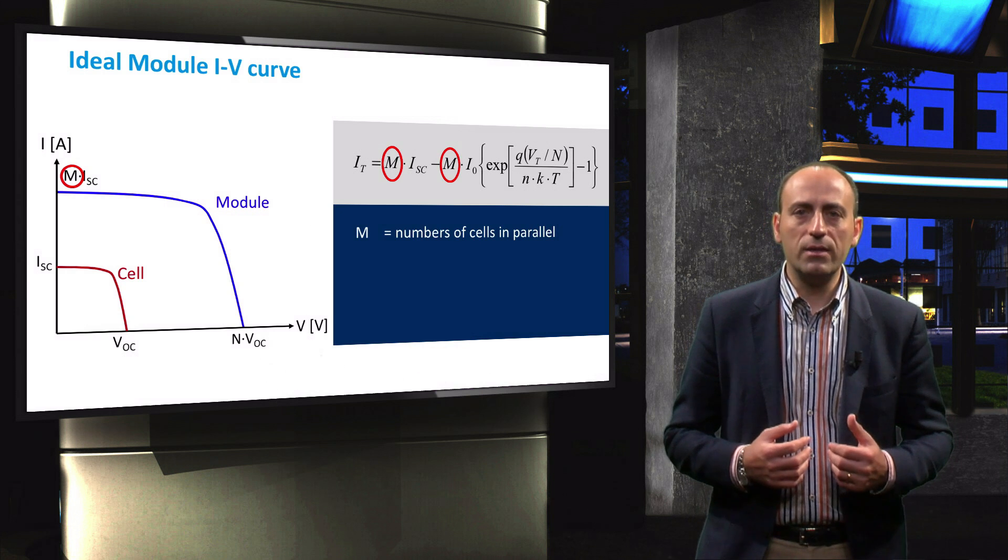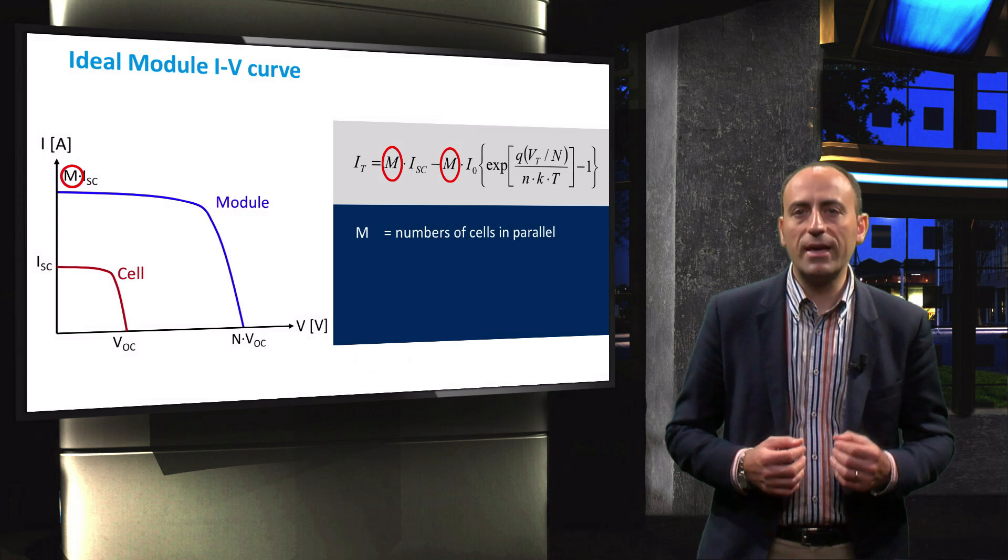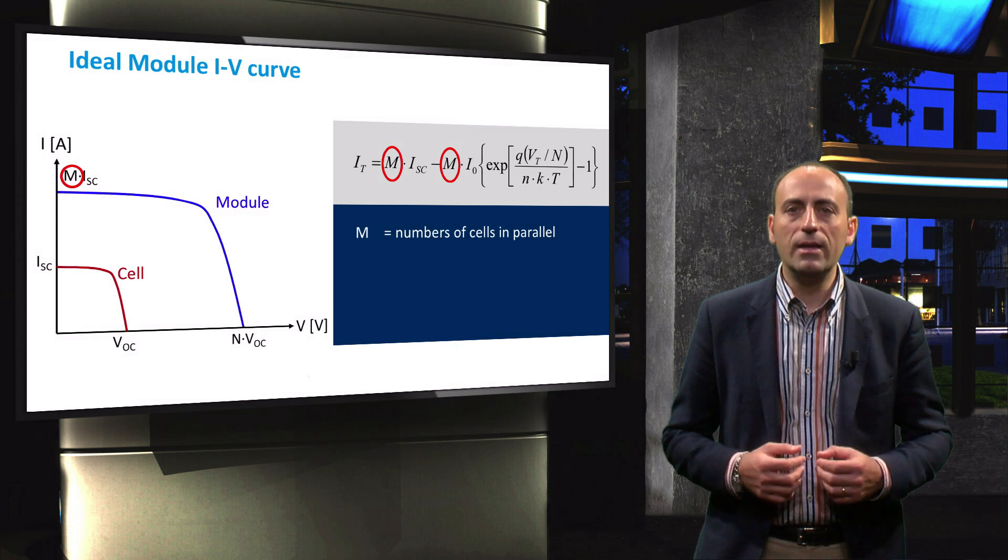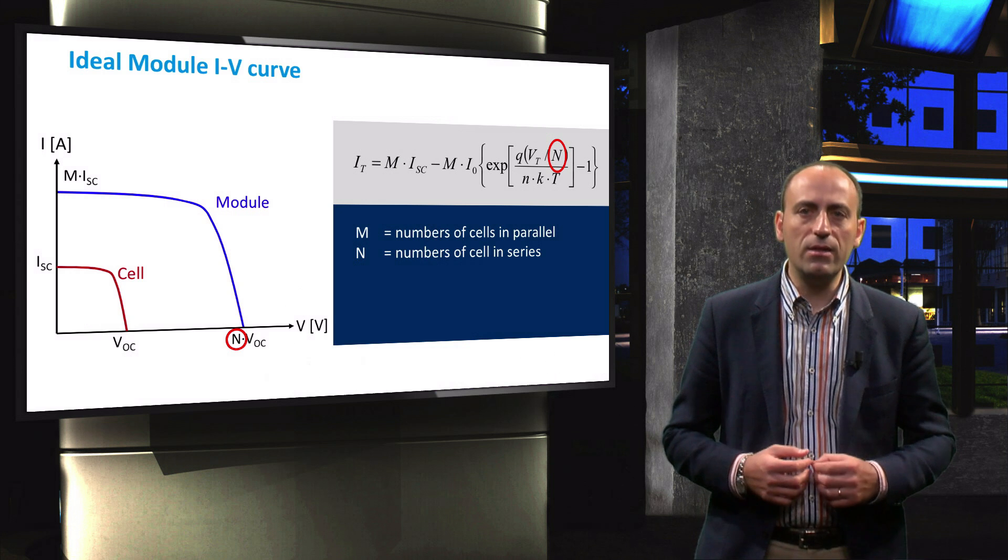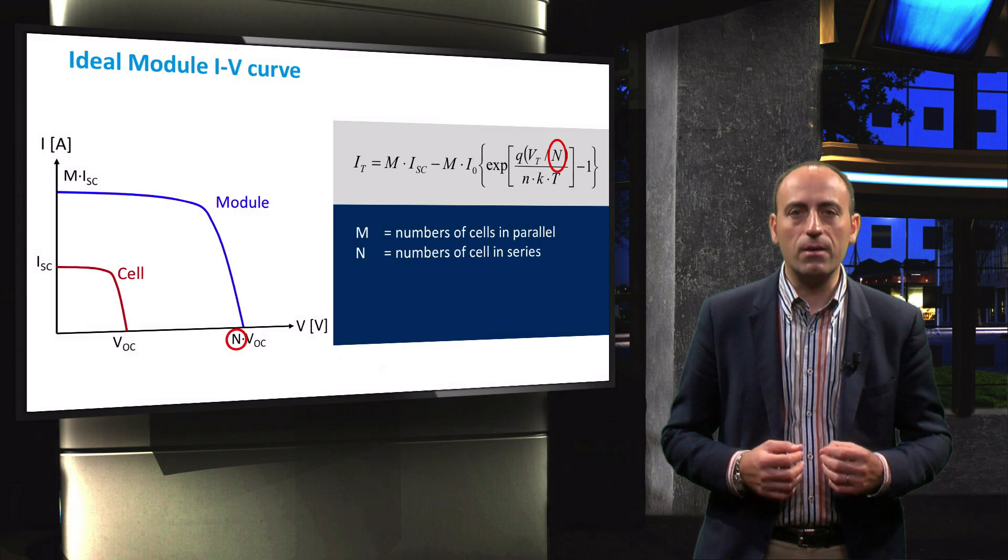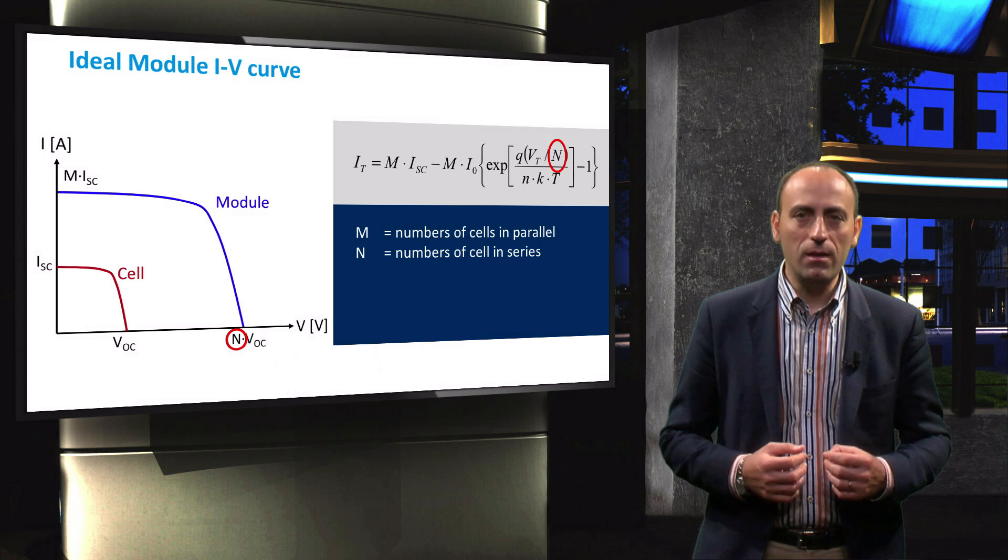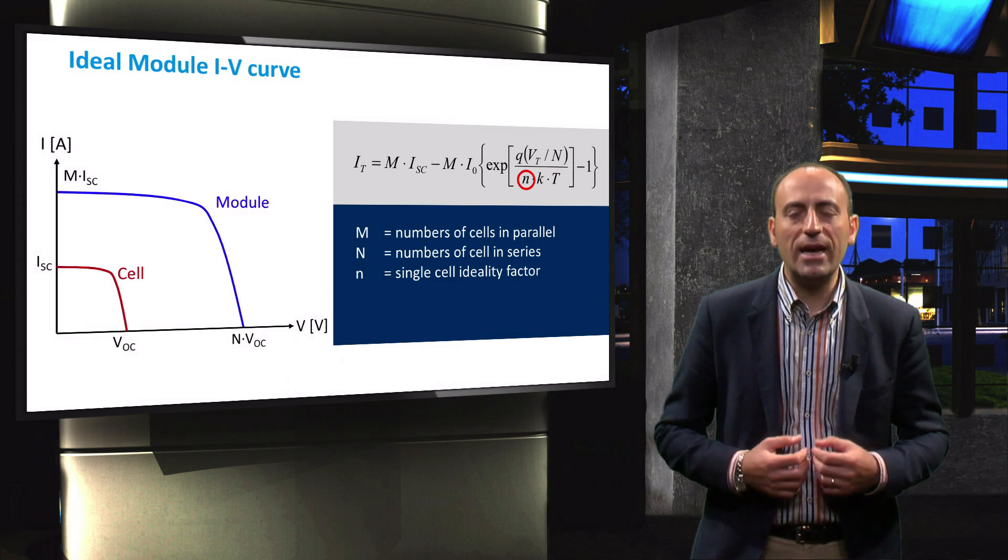The number of parallel connected solar cells is indicated by capital M, while the number of cells in series is indicated by capital letter N. The lower case n is called the single cell ideality factor.